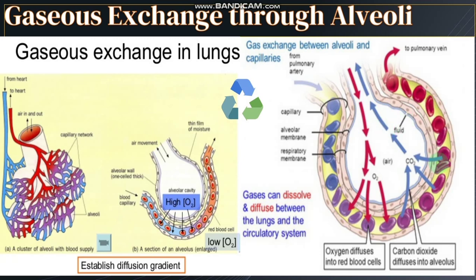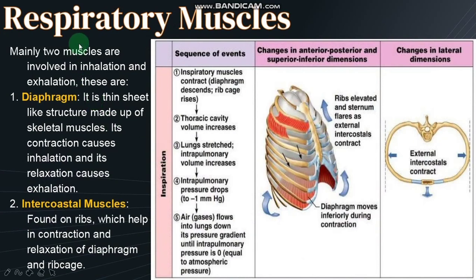As oxygen enters the blood, hemoglobin chemically binds to it and forms oxyhemoglobin, which is bright red in color. The dissolved carbon dioxide, being at high concentration in the deoxygenated blood, diffuses out into the alveolar sac cavity. As blood progresses through the capillary network, it becomes increasingly oxygenated and releases carbon dioxide. When the alveolar air becomes high in carbon dioxide and low in oxygen, it is exhaled, and this continuous gaseous exchange keeps taking place inside our lungs.